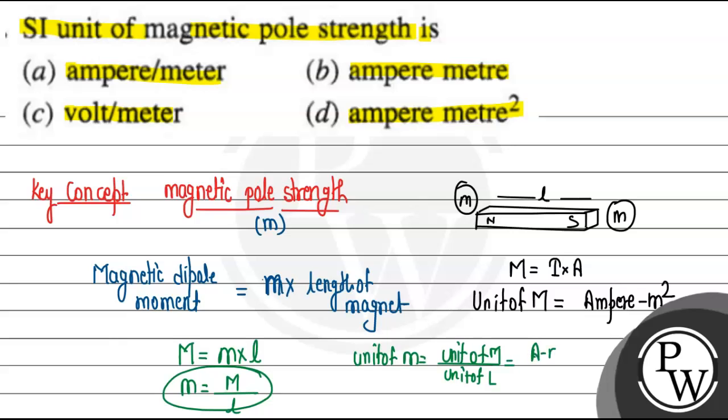Magnetic dipole moment is ampere meter square divided by meter. So one ampere and one meter, one meter cancels out. The unit we get is ampere meter. Unit of pole strength we get is ampere meter, and this is the answer for our question.